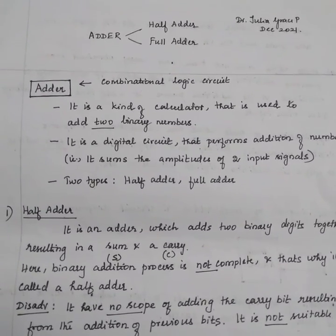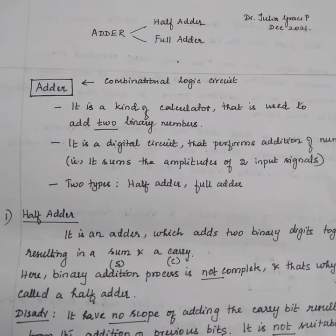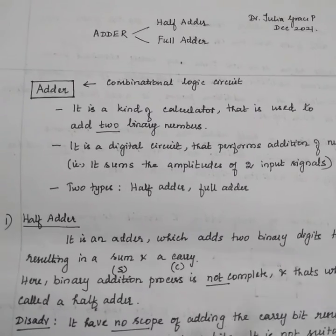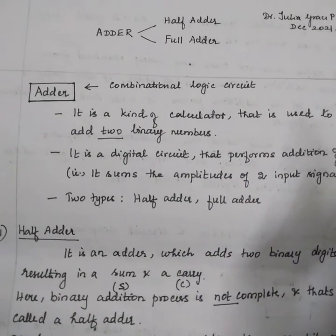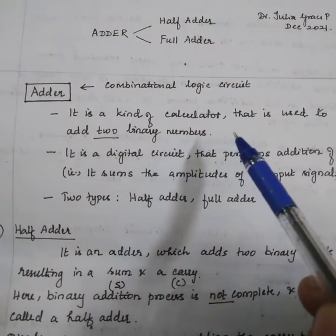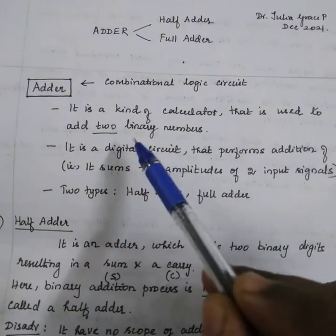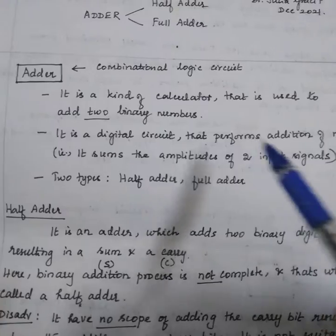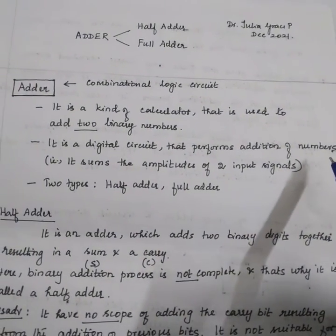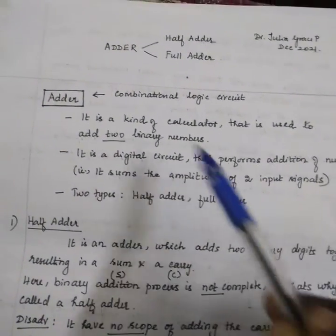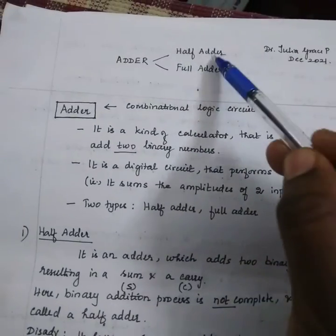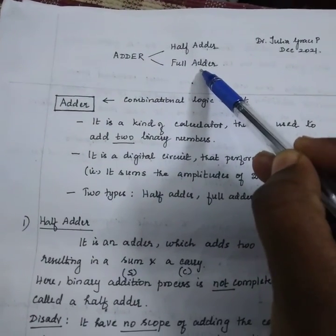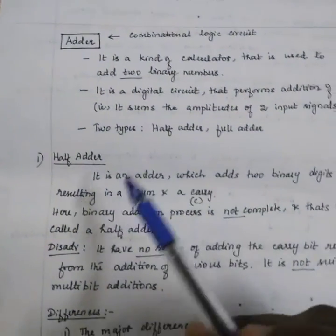Hello friends, here we will be seeing about adder circuits. The adder is a combinational logic circuit. It's a kind of calculator that is used to add two binary numbers. It is a digital circuit that performs addition of numbers. There are two types: one is half adder and another one is full adder.